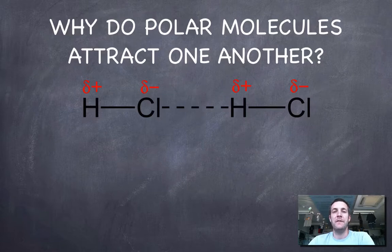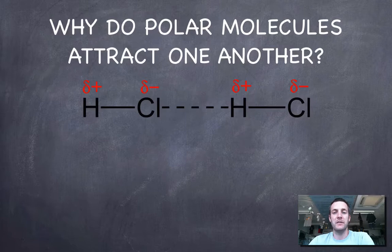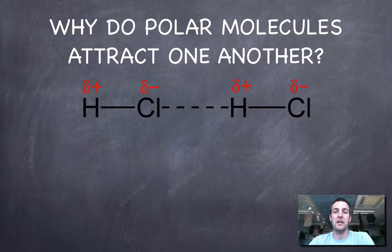However, if you've got two atoms that are joined together that have different electronegativities, then the bond between them, as we should know by now, will be polar. That means the charge in that bond will be permanently unevenly distributed.